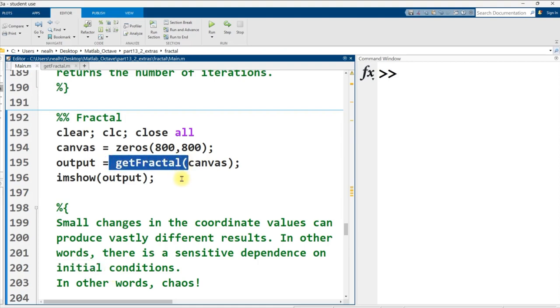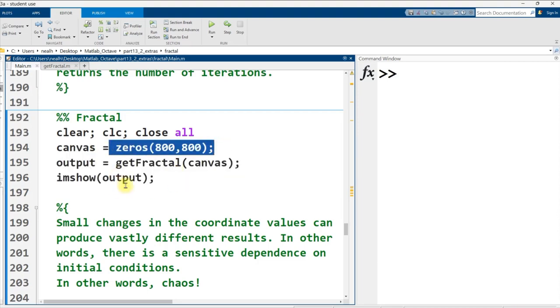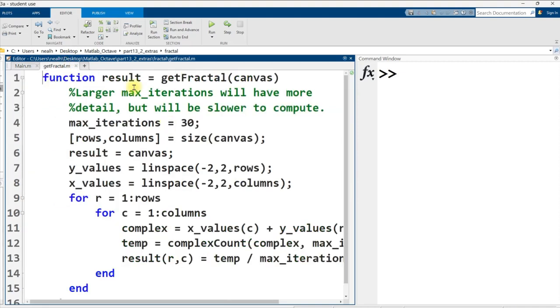Let's look at the getFractal function. But first, what are we passing to it, and what are we getting back? Here I'm generating a matrix of zeros, 800 rows, 800 columns. I'm passing that to the function, I'm getting an 800 by 800 matrix back, and I'm using the imshow function to display it as an image. All right, so let's look at getFractal.